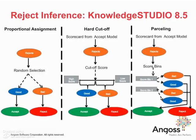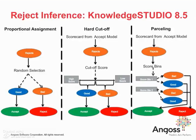The three methods for reject inference included in version 8.5 are proportional assignment, hard cutoff, and parceling. Proportional assignment randomly assigns rejected applicants into good or bad groups, and the good group is then approved. Within the hard cutoff method, a user defines a cutoff score and the bad population that falls above the cutoff score is then marked as good and approved. Parceling allows the user to select different score bins and use those to reassign the proportion of the bad population into both good and bad groups.